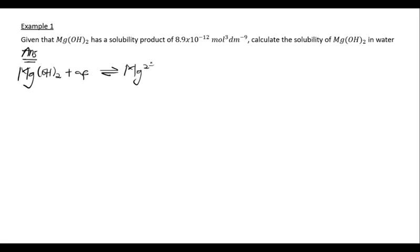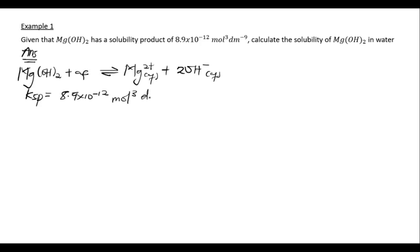In aqueous medium, magnesium hydroxide dissociates as Mg²⁺ (aq) plus 2 OH⁻ (aq), since there are two OH⁻ ions. The KSP is given as 8.9 × 10⁻¹² mol³ dm⁻⁹. Let the concentration of Mg²⁺ be s. Since there are two OH⁻ ions per formula unit, the concentration of OH⁻ is 2s.